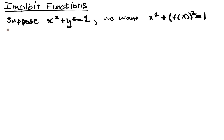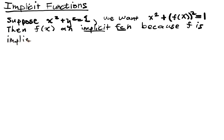Well, we call this f of x an implicit function because f is implied by the constraint, which is really great.